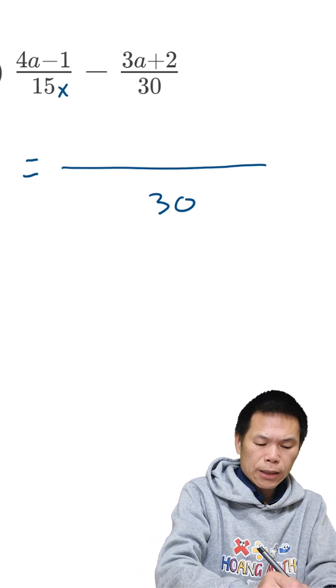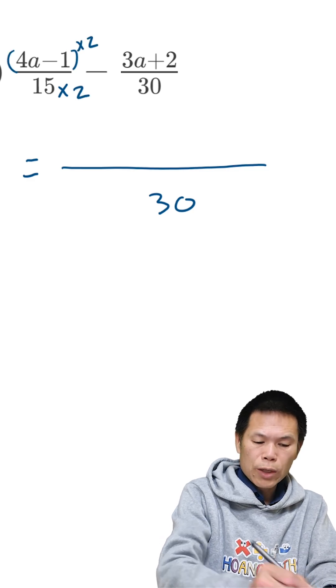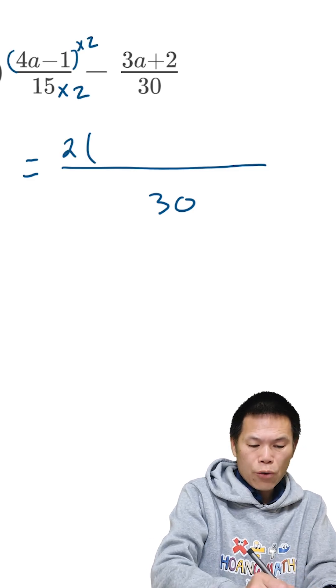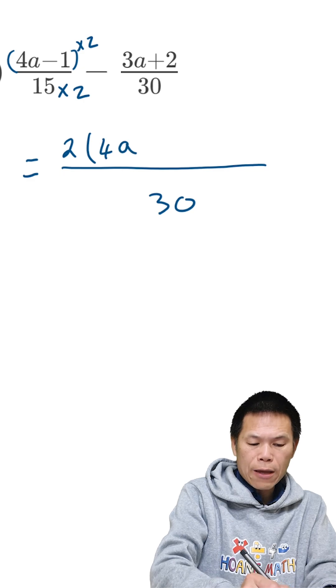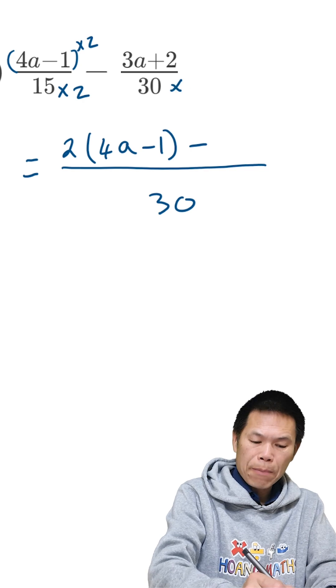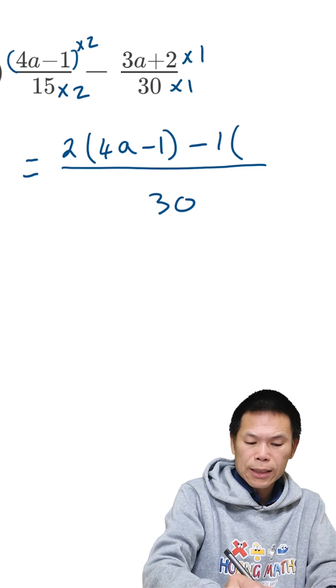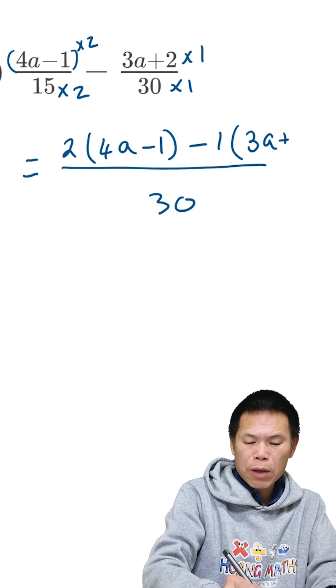So I times this by 2, and that should times by 2 as well. So that means 2 bracket 4a minus 1. We minus... so 30 we times by 1 and times 1. So that means 1 bracket 3a plus 2.